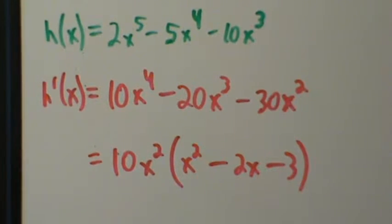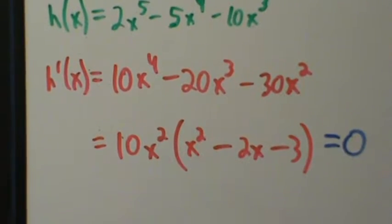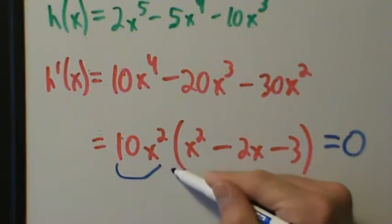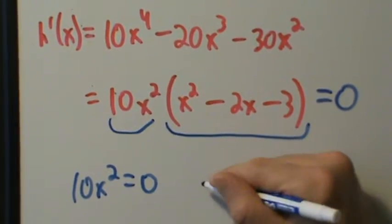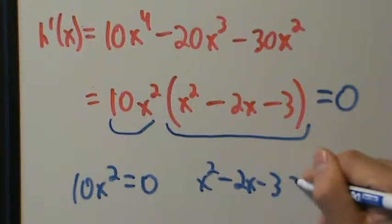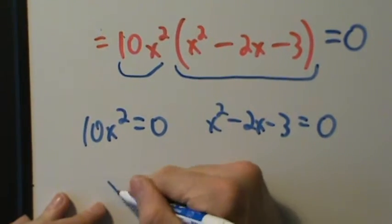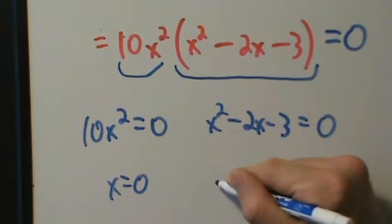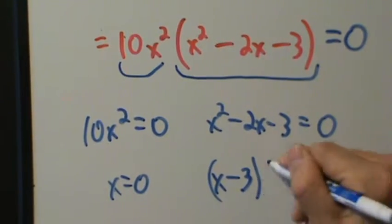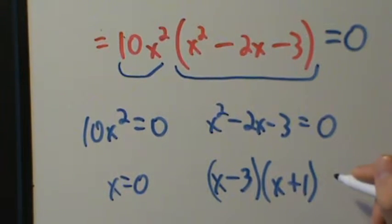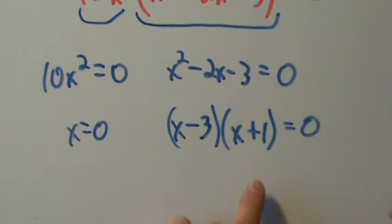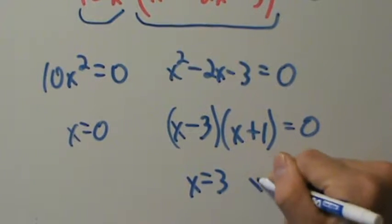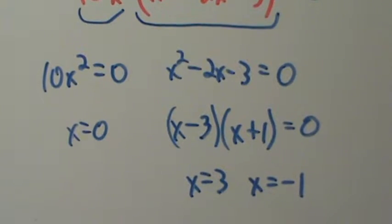So that's our derivative in factored form. Setting it equal to 0: either 10x squared equals 0, giving x equals 0, or x squared minus 2x minus 3 equals 0. That factors into x minus 3 times x plus 1, giving x equals 3 or x equals negative 1. So the only critical points are x equals 0, 3, and negative 1.